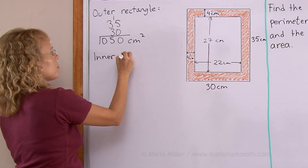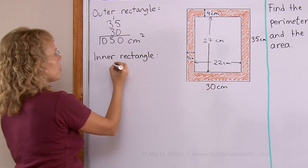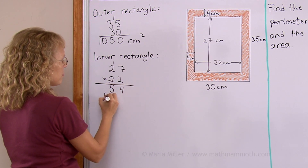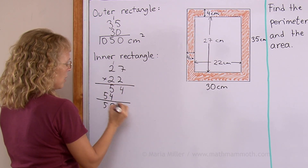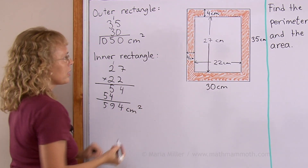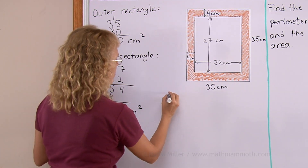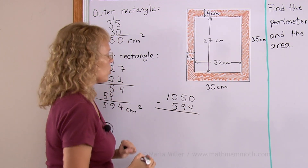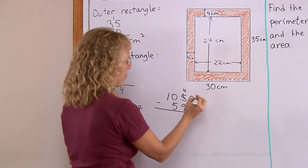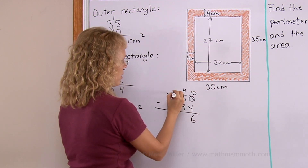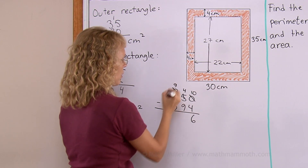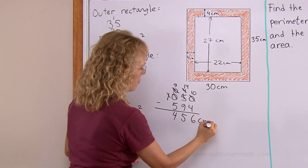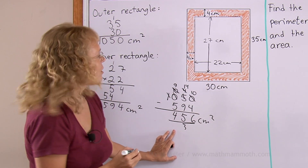So the inner rectangle is 27 times 22 centimeters, which is 594 square centimeters. Now all that is left is to subtract: 1050 minus 594. I need to regroup here, and the result is 456 square centimeters. That is my final answer for the shaded area.